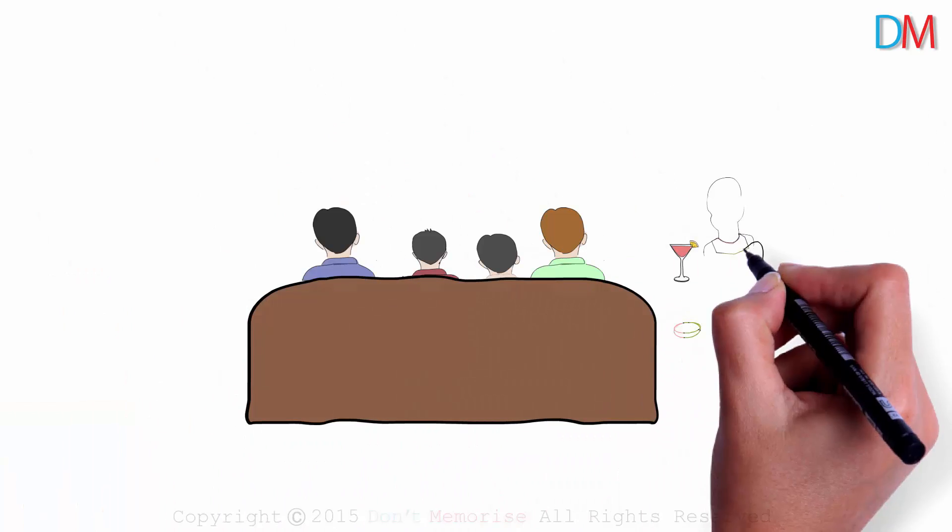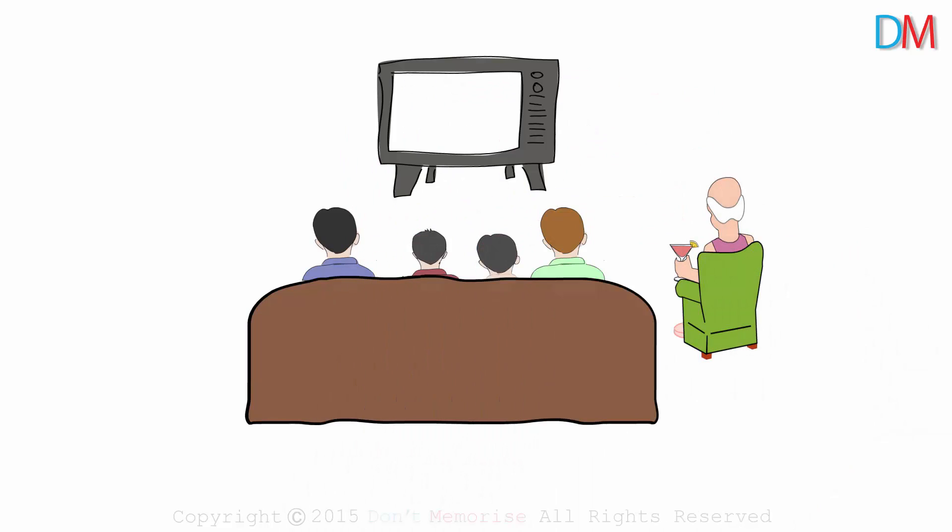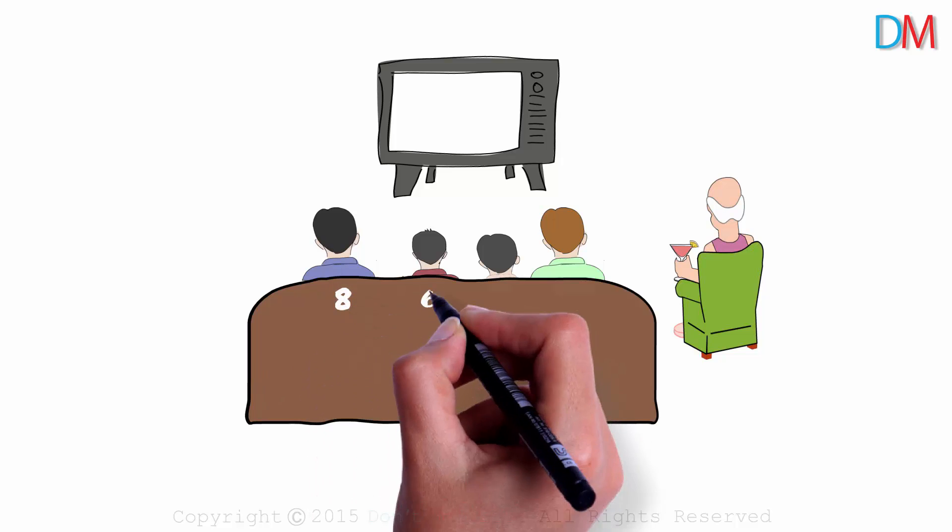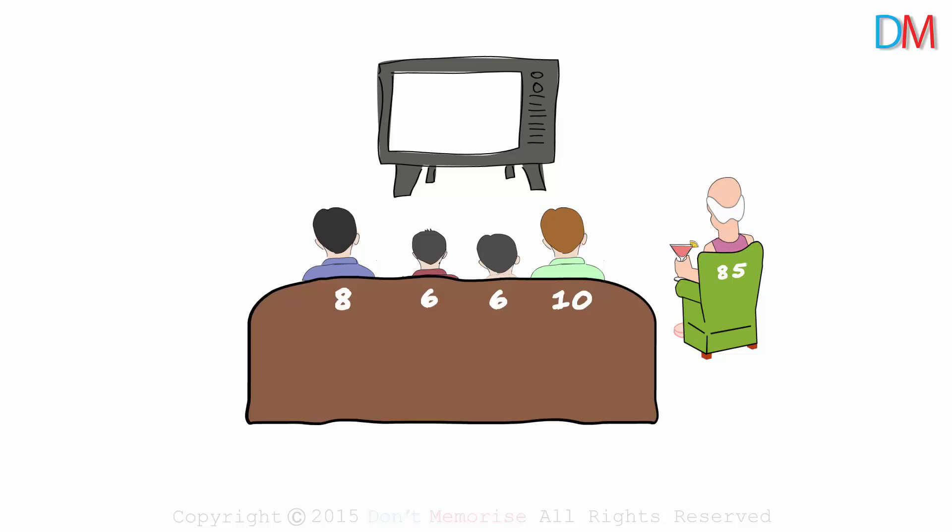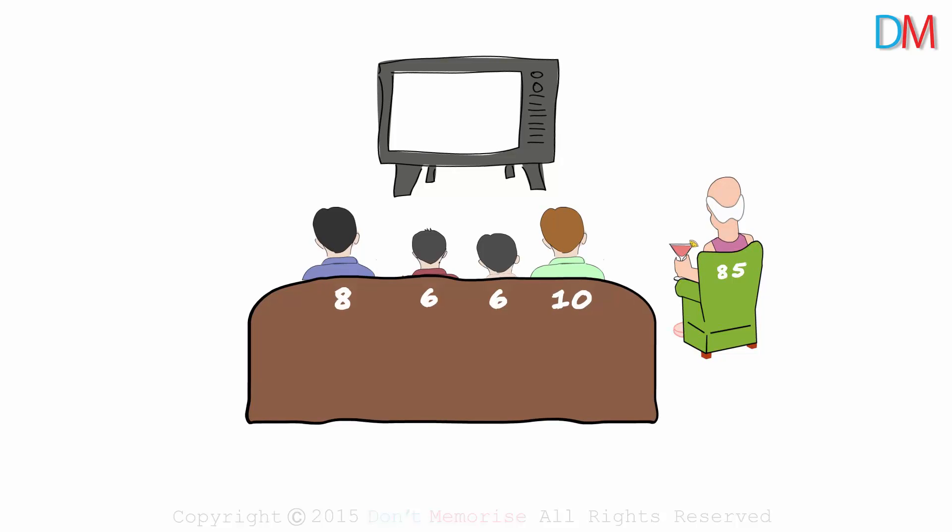Assume you have a group of people at home and you wish to play a TV channel which will have the maximum number of people entertained. The ages of the people are 8, 6, 6, 10 and 85 years respectively. To entertain maximum people, you decide to find a central value of the ages listed here.